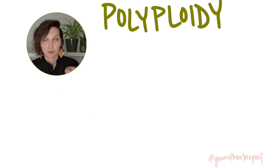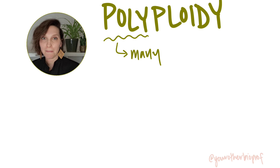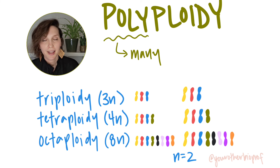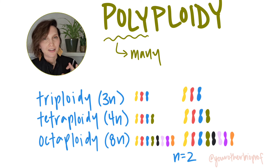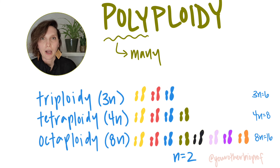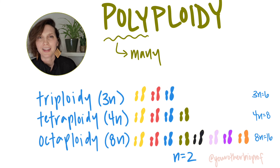Instances where you have three or more sets of chromosomes in a cell can be described as polyploidy — 'poly' meaning many. This is the result of chromosomes not separating properly during cell division. Plants tolerate polyploidy very well and it's quite common, not so much in animals aside from some groups of amphibians and fish. You can use that prefix as a clue as to how many chromosome sets are present in that organism or cell type.